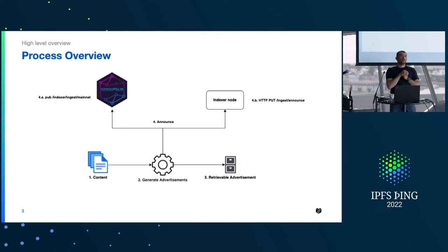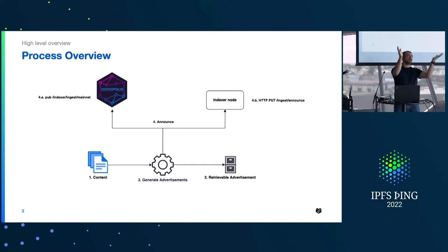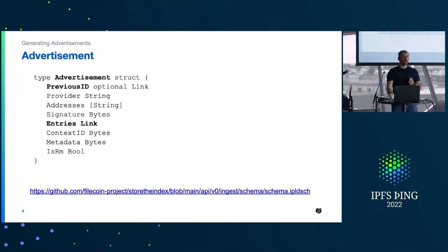What is the general overall process of providing indices? First, we have some content. That content goes into a process of generating advertisements, which I'll explain in a minute. The advertisements generated are stored in a local file system. Advertisements themselves are content-addressed, and then the content provider makes an announcement to the network saying, 'I've got this stuff.' Now I'll dive deeper into each of these components.